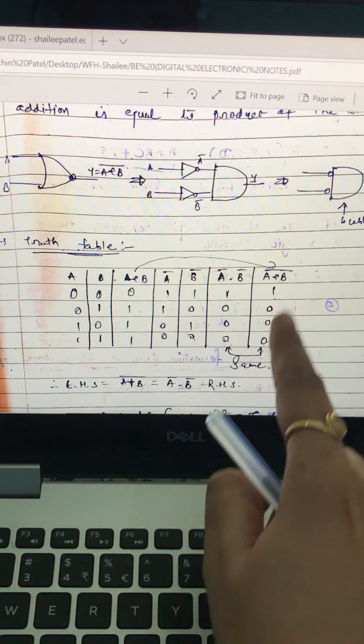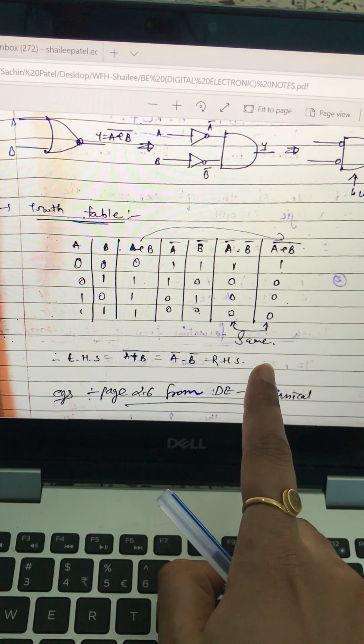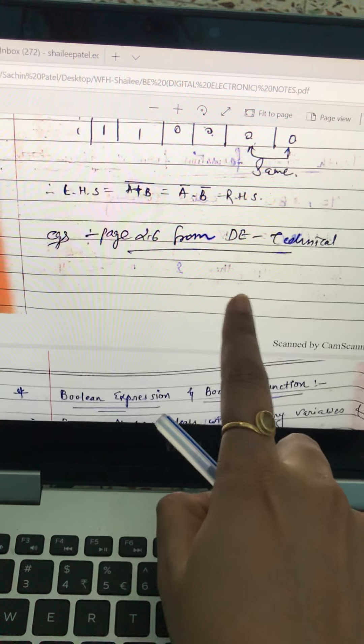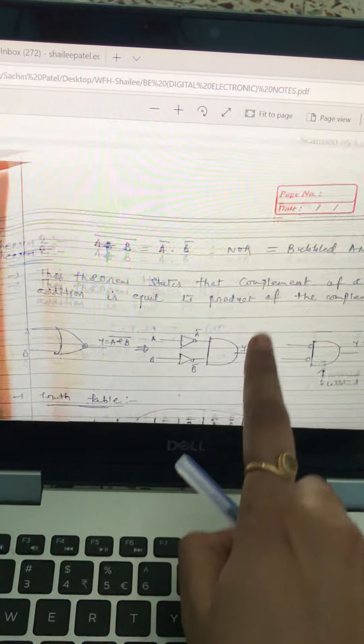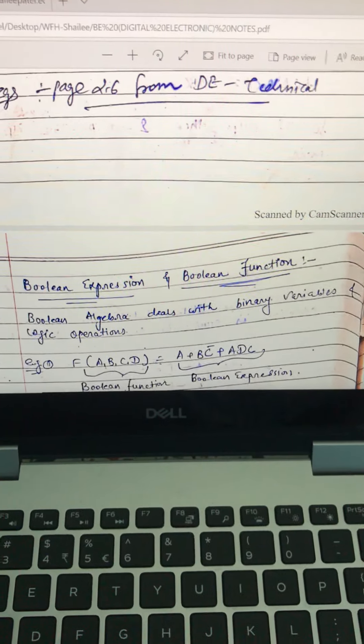See these two columns are same. So again it is proved that these are equal. A plus B bar is equal to A bar dot B bar. So this is De Morgan's theorem and it is asked as a theory separately sometimes and you can use it in sums too. Thank you.